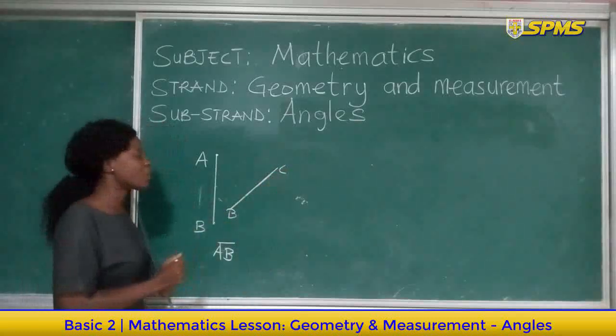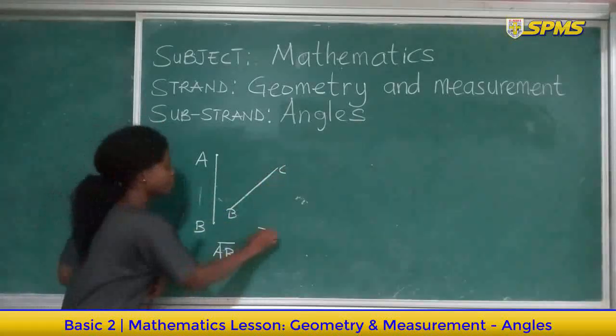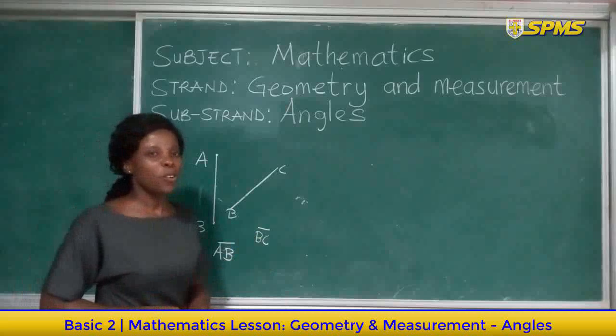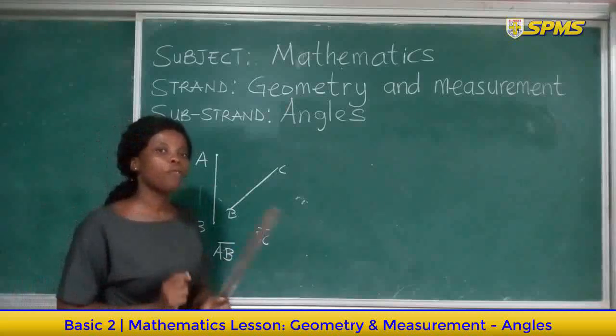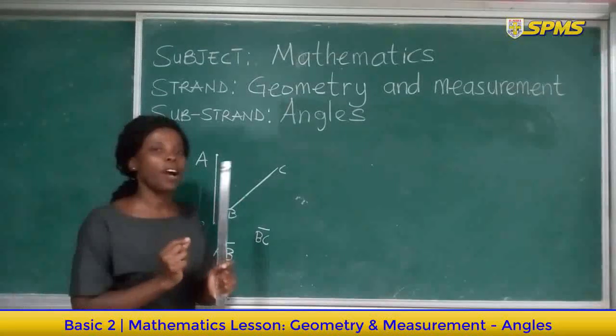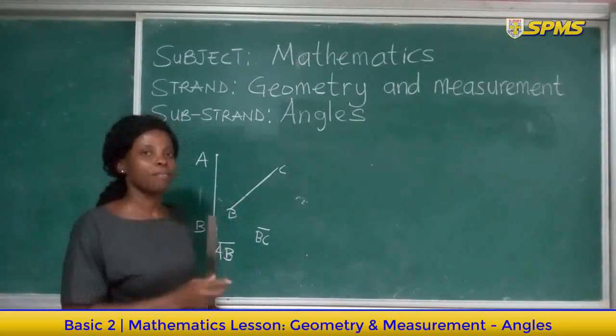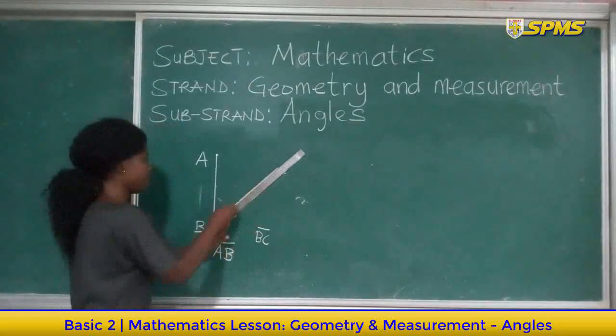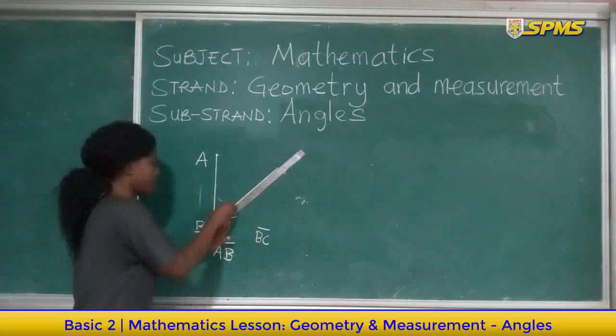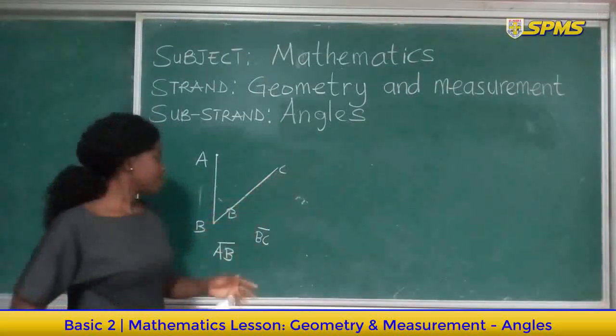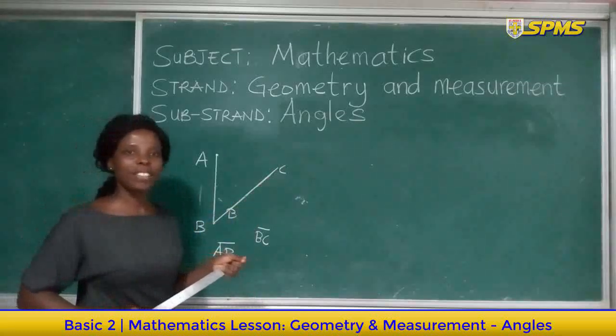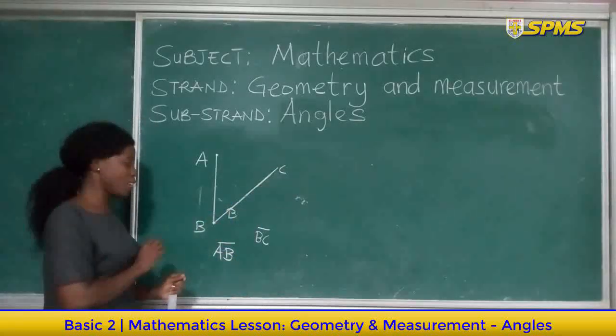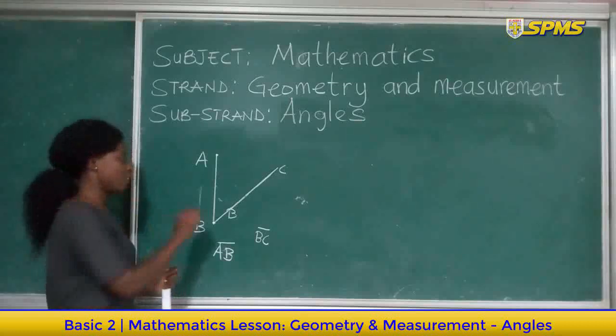So I'm going to draw another line to get an angle. This is line segment BC. Do I have an angle now? Not at all. So we have to find a way to put these two lines together to help them meet at a point. Let's try and do that. Good, are the lines meeting? Yes, yes. Where did they meet? At this point which is B. So I have my angle here.